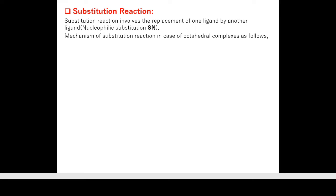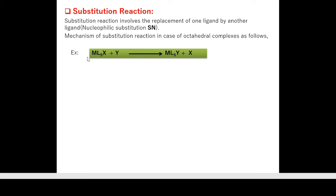This is the general example of a substitution reaction. In the octahedral complex ML₅X, when attacked by incoming ligand Y (which acts as a nucleophile), it gives ML₅Y along with X as a product. This is the general substitution reaction.